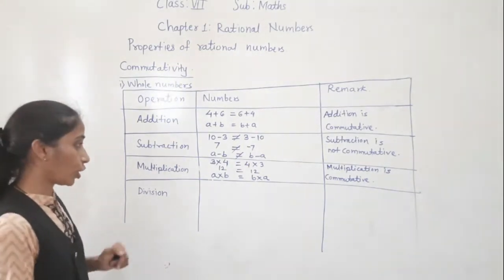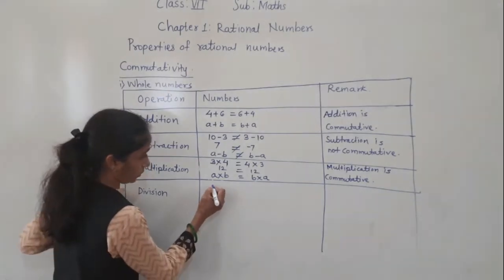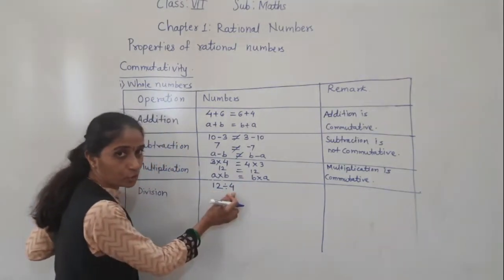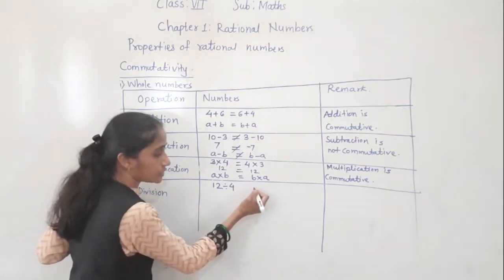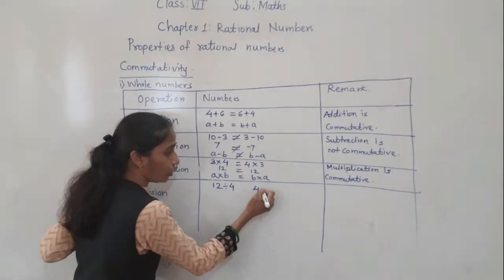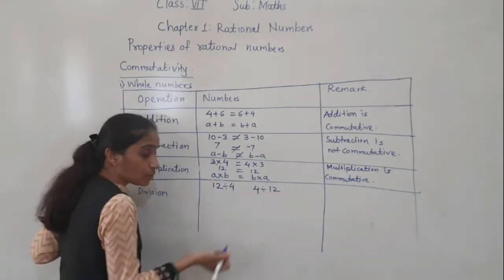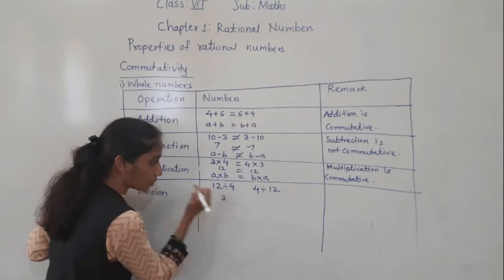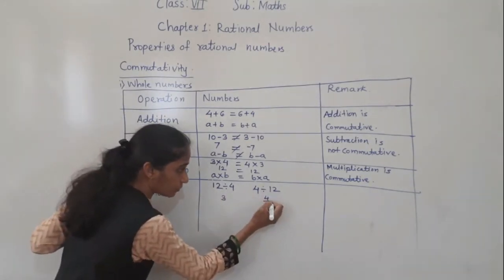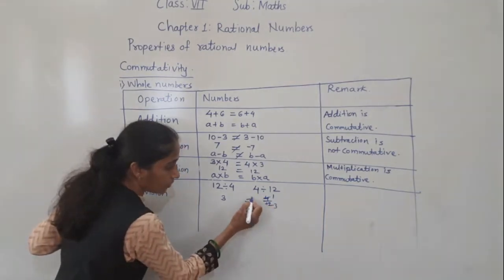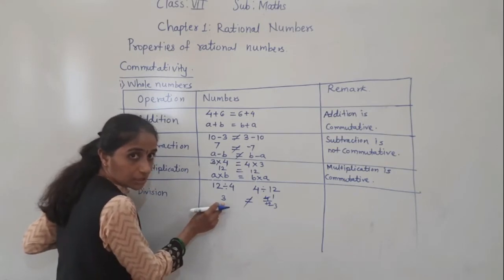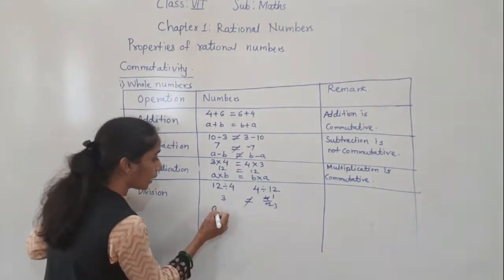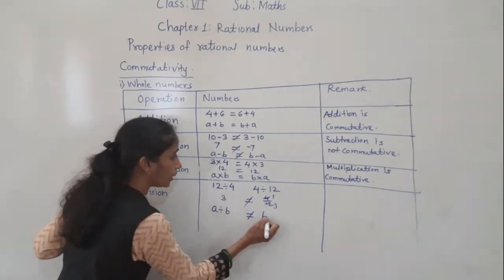Now let's see if it works for division. Suppose 12 divided by 4, and here I do 4 divided by 12 — that is a divided by b and b divided by a. Now 12 divided by 4: 4 threes are 12, so you get 3. But 4 divided by 12 gives a fraction. Here you got a whole number 3, and here you got a fraction. These are not equal.